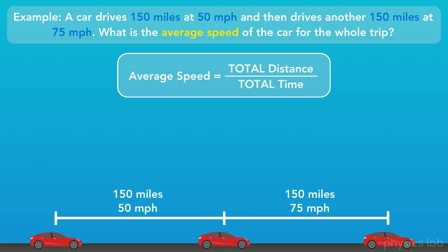Well, we know the distance and the speed of the car for each part of this trip. So, what we can do is find the amount of time the car traveled for each part of the trip, and then add them together to get the total time. For the first part of our trip, we have 150 miles divided by 50 miles per hour, which equals 3 hours.